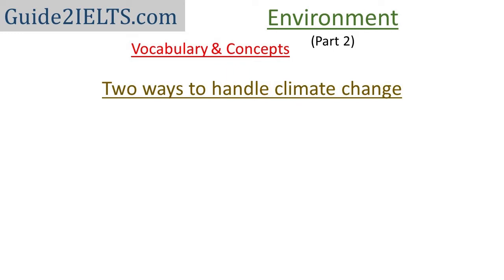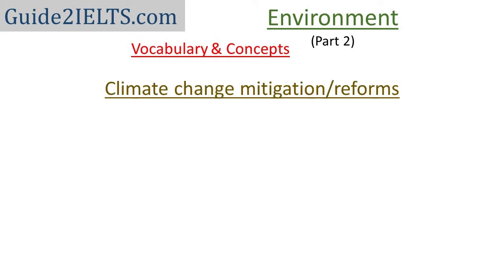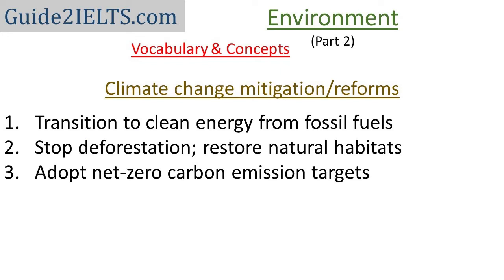There are two ways to handle climate change. One is climate change mitigation, or climate change reform — that is, to reduce climate change. The second is climate change adaptation — that is, to adapt or adjust to the changing world. For climate change mitigation, a transition is needed towards clean, renewable, green energy. We also need to stop deforestation and restore natural habitat.